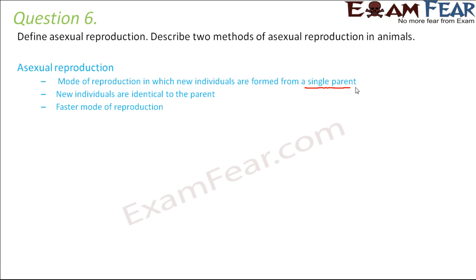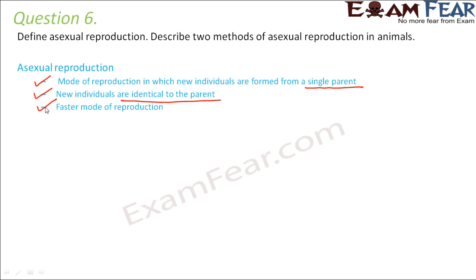In asexual reproduction, only one parent is involved, so new organisms develop from one parent. There is no concept of male and female — no distinction of sexes at all. The new individuals are going to be exactly identical to the parent, both morphologically and genetically identical.